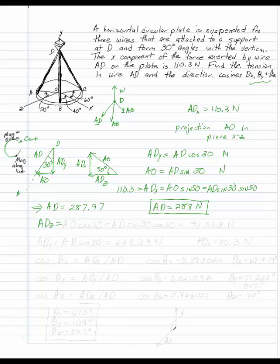ADZ, if I wanted to finish getting these components, is AO cosine fifty. This is AD sine thirty, cosine fifty. And that is 92.553 newtons. ADY, similarly, I'm just plugging back into the equations I already had to get some numbers, is AD cosine thirty. This is 249.39 newtons.